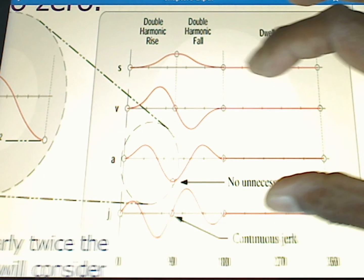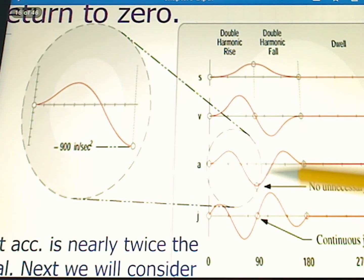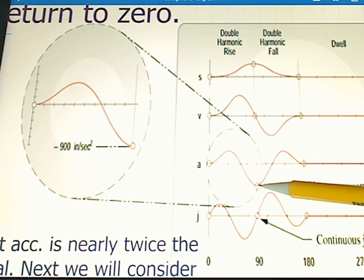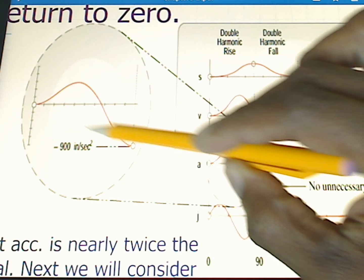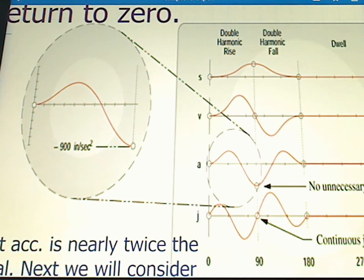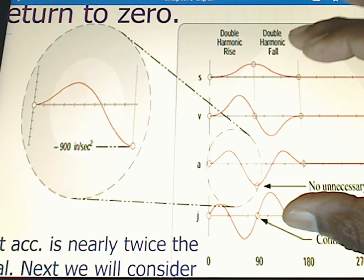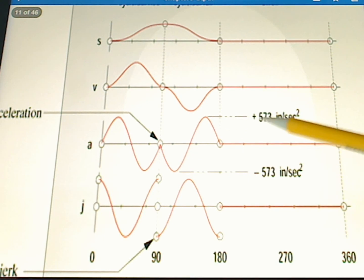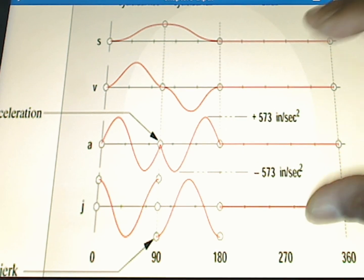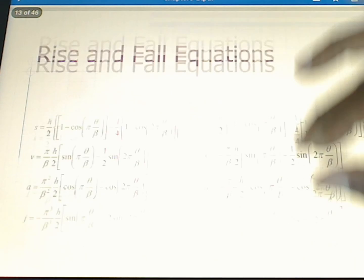However, if we zoom in on that acceleration, what we'll see then is that our maximum acceleration in this case is negative 900 inches per second squared. That's our maximum magnitude of our acceleration, and that's nearly twice what we saw before. So if we go back to what we had before in our result and we zoom in on that acceleration, we see that acceleration maximum was 573 and negative 573. So we've almost doubled our maximum acceleration using our double harmonic.